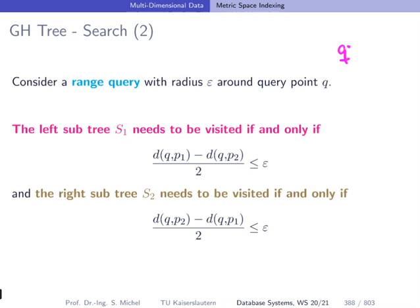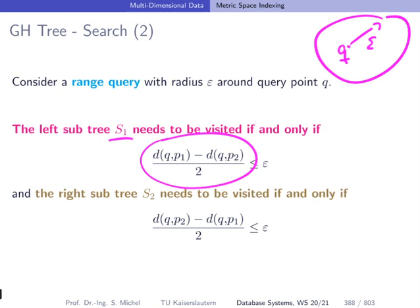So we have a range query with point Q and radius epsilon. We can say: the left subtree needs to be visited if and only if (d(Q,p2) minus d(Q,p1)) divided by 2 is smaller or equal than epsilon. And the right subtree needs to be visited if and only if (d(Q,p1) minus d(Q,p2)) divided by 2 is smaller or equal than epsilon. Similarly to the VP tree, we have derived a pruning rule that guides us down the tree and helps us eliminate visiting subtrees which cannot contain any valid query result.